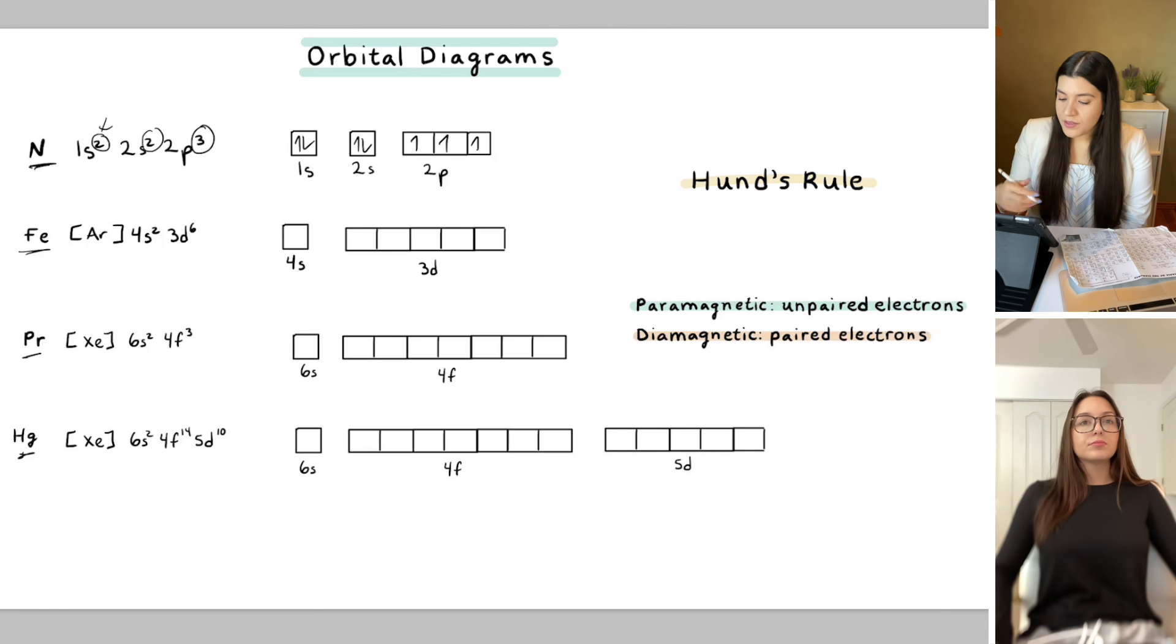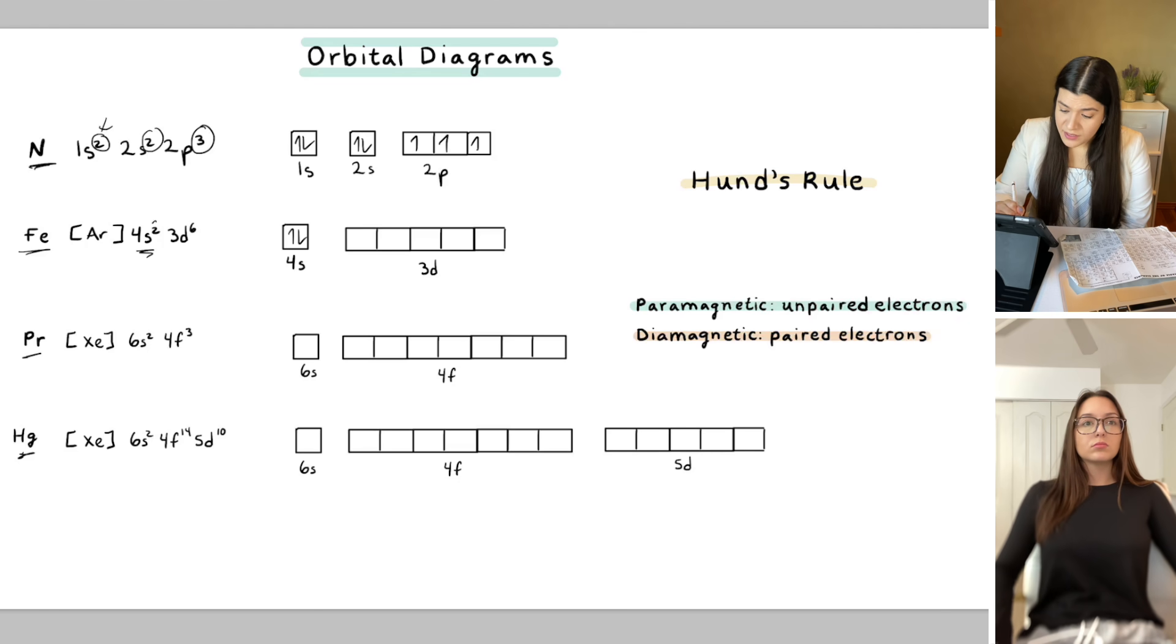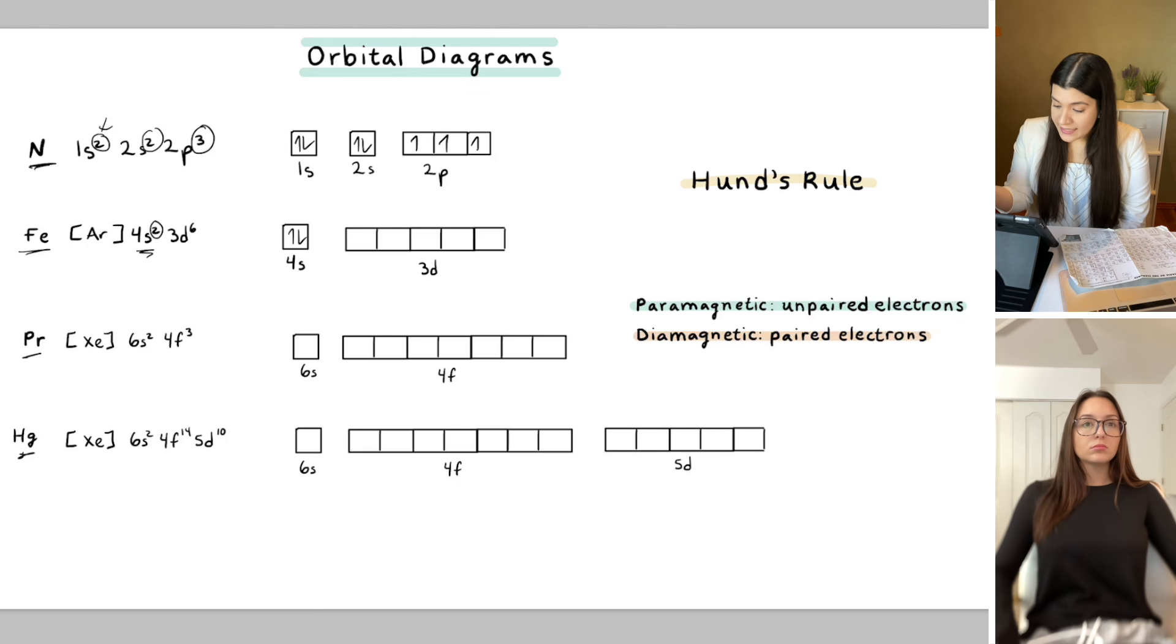And then I'm going to do this again with the next one. So I'll fill the 4s2. So that's just on its own because that tells us it's completely full. Next we have 3d6 and we have five different orbitals.